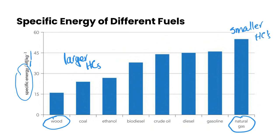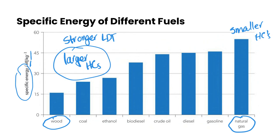We can tie this back to London dispersion forces. Larger hydrocarbons have reduced volatility due to stronger London dispersion forces, and this affects the way the hydrocarbon molecule interacts with oxygen and the type of combustion that occurs — so down here is more incomplete combustion. A higher specific energy is a good thing. Natural gas is one of the cleanest fossil fuels that we can burn in terms of the fossil fuel types.